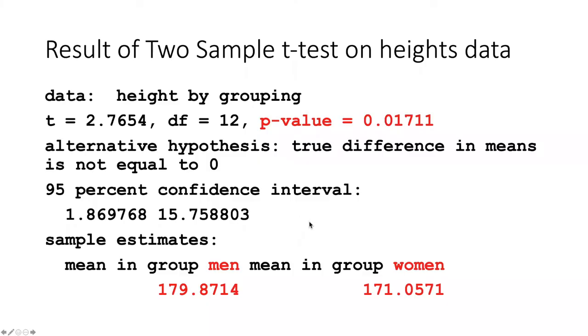So here, just to review, are the results of the test we did. The p-value is listed up here. It's 0.017. And here are the means of the men's heights, 179.8, and of the women's heights, 171.0.